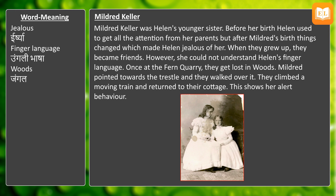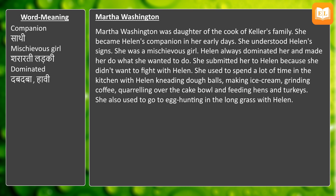Mildred Keller was Helen's younger sister. Before her birth, Helen used to get all the attention from her parents, but after Mildred's birth things changed, which made Helen jealous. However, as they grew up they became friends, though Mildred could not understand Helen's finger language. Once at Fern Quarry, they got lost in the woods. Mildred pointed towards the trestle and they walked over it, climbed a moving train, and returned to their cottage, showing her alert behavior.